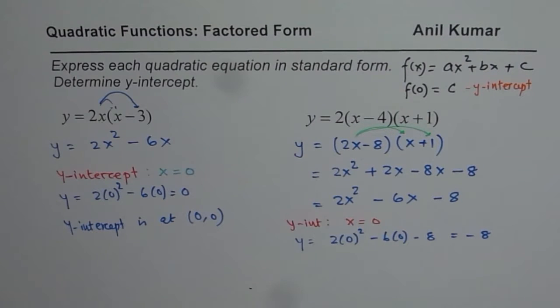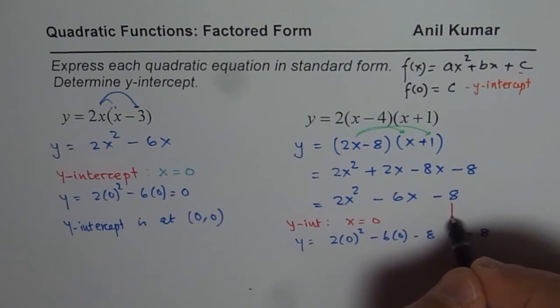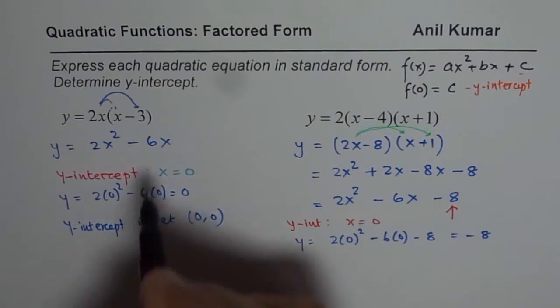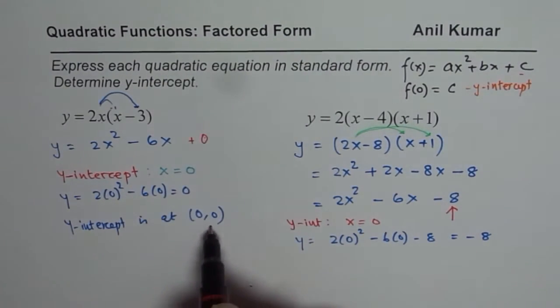So you see here that the c value, here in this case minus 8, is the y-intercept. In this case it is plus 0. So 0 is your y-intercept.